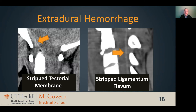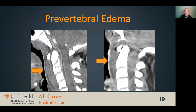Extradural hemorrhage is the most common soft tissue finding I see on CT in patients with upper cervical injuries and is seen in about three-quarters of patients. This hemorrhage often presents as stripping of the tectorial membrane off the clivus, as seen on the left, or stripping of the ligamentum flavum, as on the right. Prevertebral edema and hemorrhage is another indicator of cranial cervical injury. The hemorrhage sits between the retropharyngeal fat and the vertebral bodies, displacing the retropharyngeal fat anteriorly, which can help identify subtle cases by recognizing focal soft tissue density between the fat and bone.